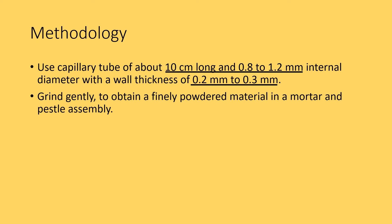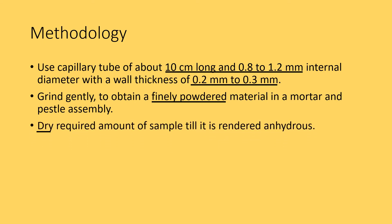Grind gently to obtain a finely powdered material in a mortar and pestle assembly so that the sample can be packed into the capillary tube easily. Dry the required amount of sample until it is rendered anhydrous — it is important that the sample must be dry and does not stick to the walls of the capillary tube. If there is moisture in the sample, the melting process is not clear and may drag on, making the exact melting point decision difficult. Take a smaller quantity adequate for filling the capillary tube for drying, as it may dry faster.